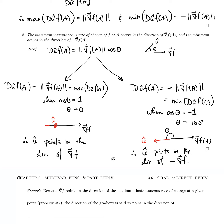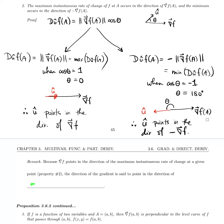So what property two is saying is that if we take u-hat in the direction of the gradient, we are going to get the maximum possible rate of change for this function at point a. This remark builds on that: because the gradient of f points in the direction of the maximum instantaneous rate of change at a given point, the direction of the gradient is said to be the direction of steepest ascent.